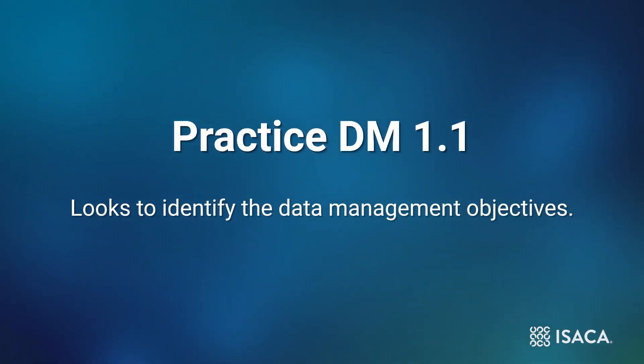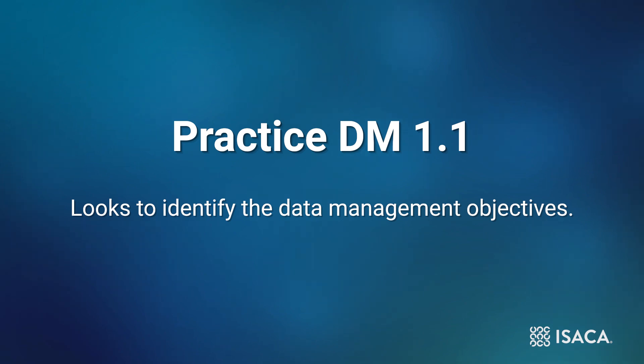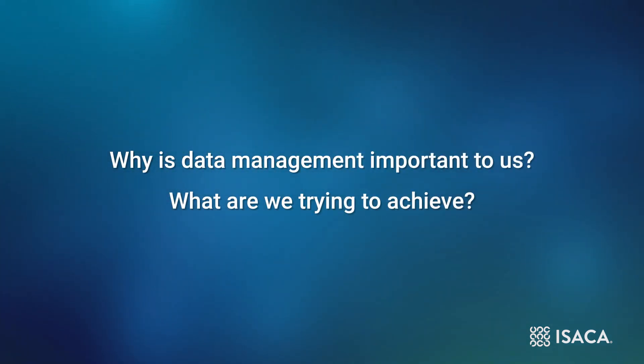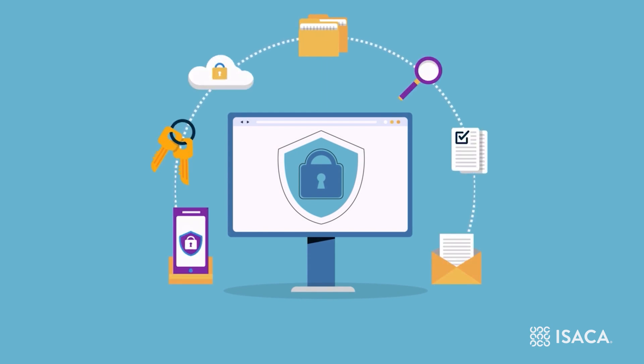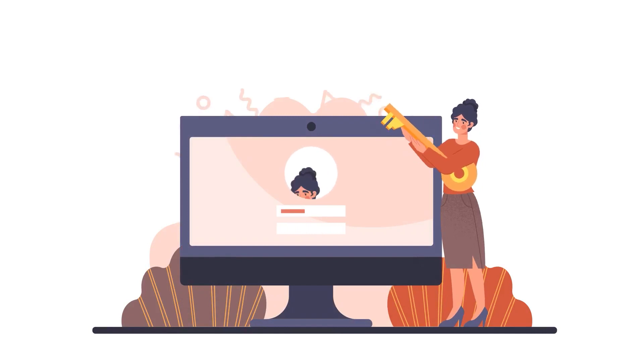Practice DM 1.1 looks to identify the data management objectives. Level 1 behavior is relatively unsophisticated, but it is important to realize that this practice formulates a foundation for all the other practices. It is establishing the foundation for: why is data management important to us? What are we trying to achieve? So even though at Level 1 the objectives may be relatively simple, determining the basics of what we are doing in this area is important and will establish context for the structure and complexity of the data management activities. It is natural for an organization's maturity and capability with data management activities to evolve as the organization proceeds through the practice group levels. But even at a basic level, at Level 1, we are likely to be interested in maintaining the security and confidentiality of important data items, as well as making sure they are available when we need them.